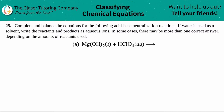Number 25: complete and balance the equations for the following acid-base neutralization reactions. If water is used as a solvent, write the reactants and products as aqueous ions. In some cases, there may be more than one correct answer, depending on the amounts of reactants used.